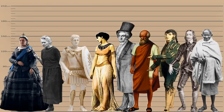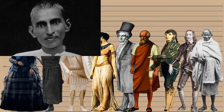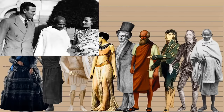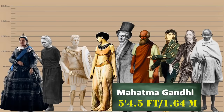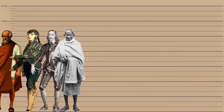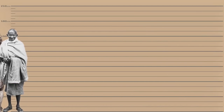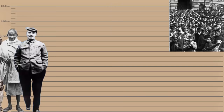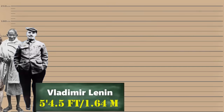We have the Indian activist who was the leader of the Indian independence movement against British colonial rule. Mohandas Karamchand Gandhi was known to be 5 feet 4.5 inches. Followed by the Russian revolutionary, politician and political theorist, Vladimir Lenin, who also stood at 5 feet 4.5 inches.